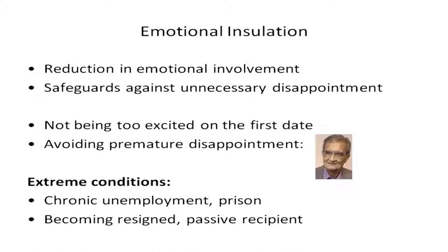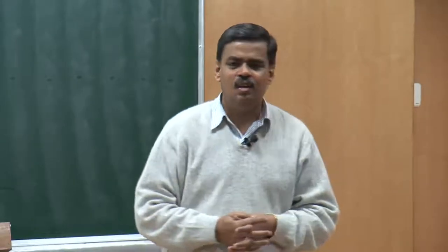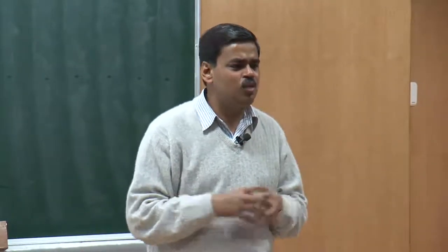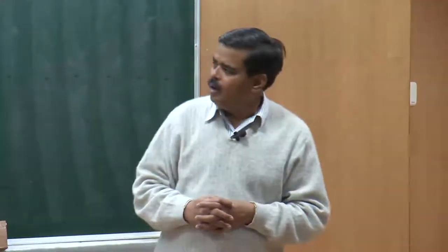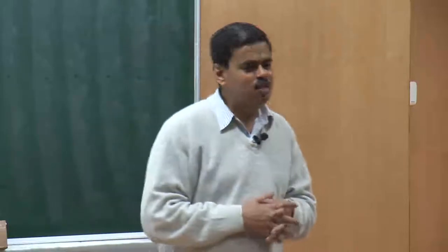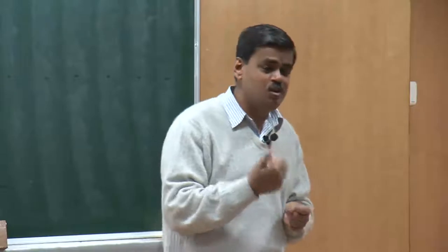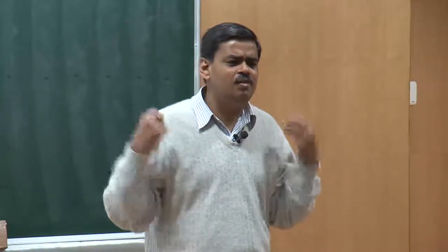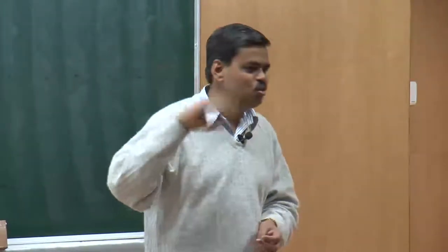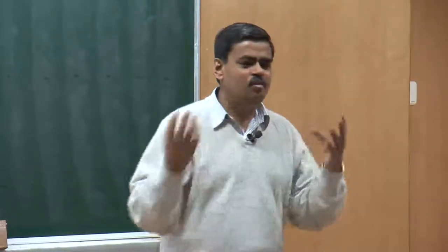Now we move to emotional insulation. Emotional insulation is a mechanism that helps you safeguard yourself against unnecessary disappointments — what you do is reduce your ego involvement and emotional involvement in a certain situation, and therefore, irrespective of the result, because you are not deeply involved, you do not derive a sense of disappointment. One example is a person who did not like his workplace and during tea time would read the newspaper to avoid the sermons that used to be narrated at that time.